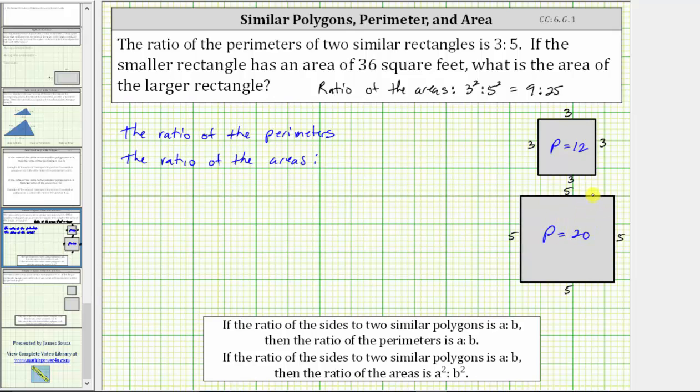The ratio of the perimeters comparing the small square to the large square is 12 to 20. The greatest common factor between 12 and 20 is four. To simplify the ratio, we divide 12 and 20 by four. 12 divided by four is three. 20 divided by four is five, giving us the ratio of three to five for the perimeters, which was given, and now let's find the ratio of the areas.